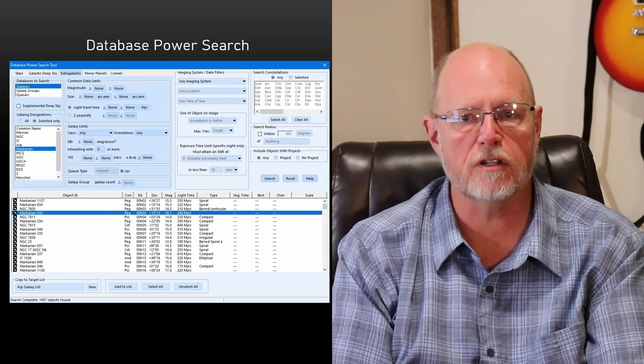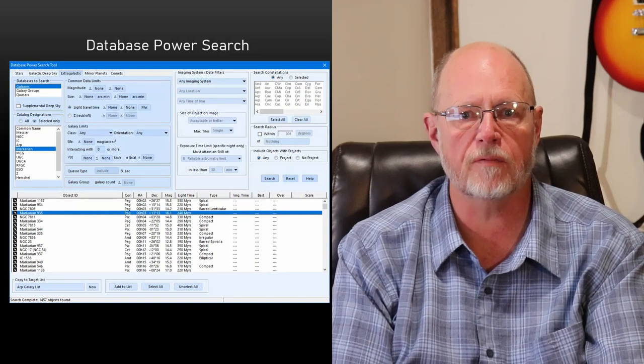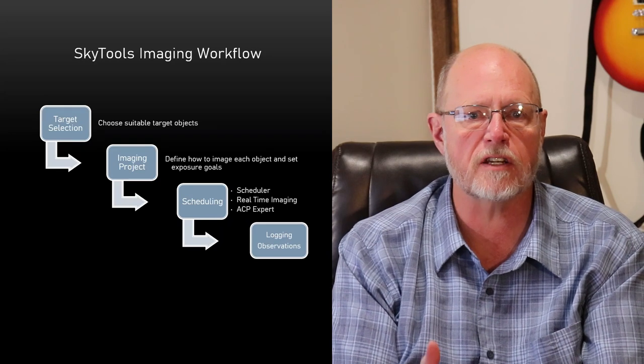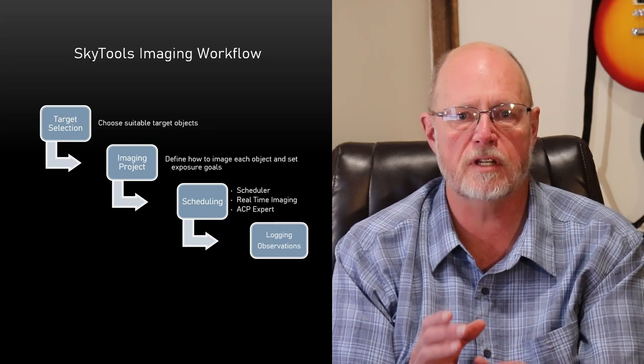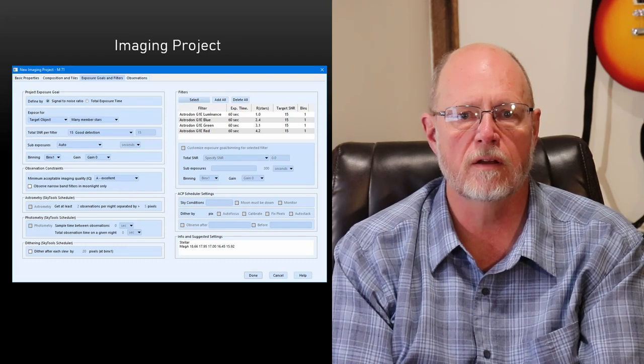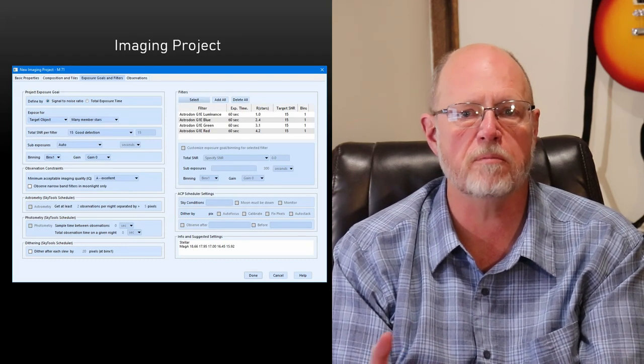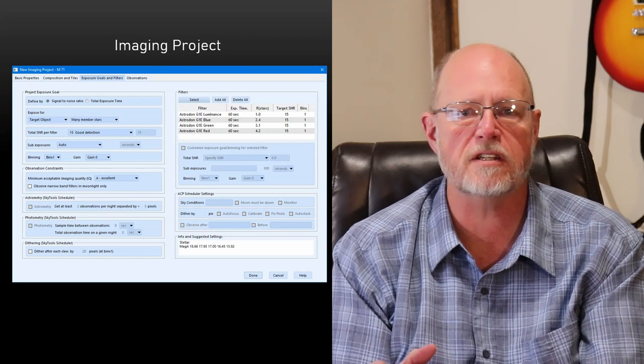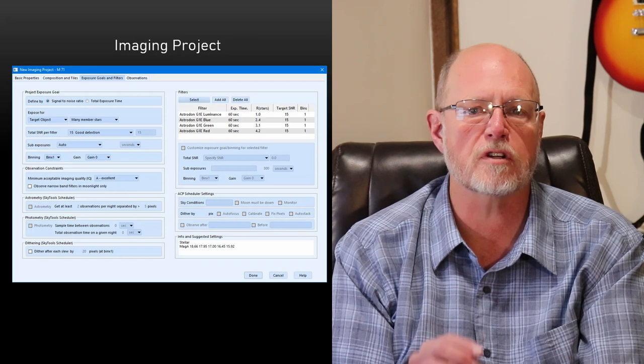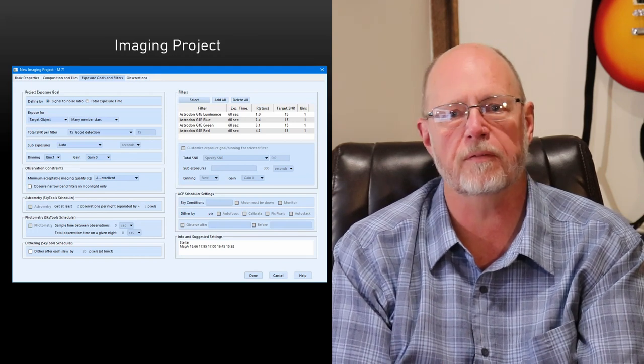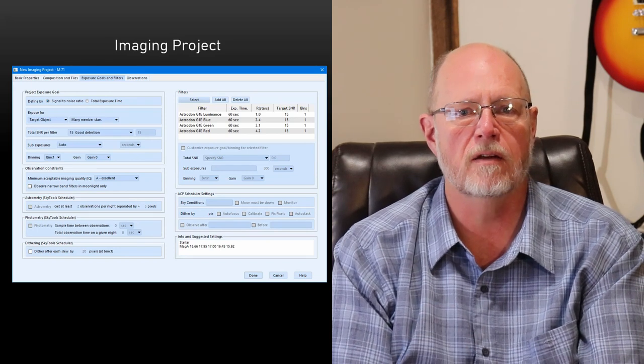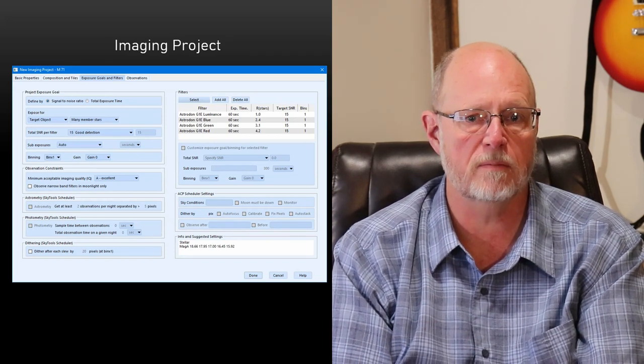Regardless of how you choose a target, the next step in the workflow is to create an imaging project for it. The imaging project is just short of a plan for taking images. In this step, you define how you want to image the target. Here you can finally adjust the composition, select a camera rotation angle, create a mosaic, choose the filters you will be using, and establish your exposure goals for each filter. I said before that it's just short of a plan. That's because it doesn't include when you will be imaging.